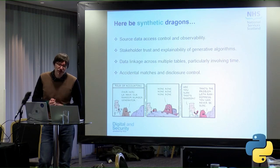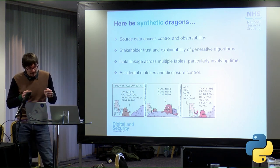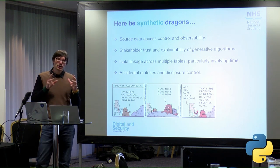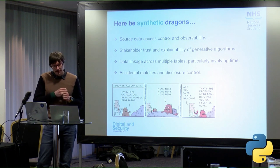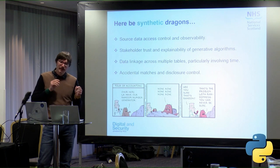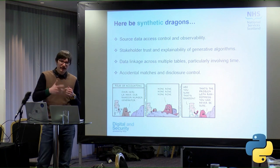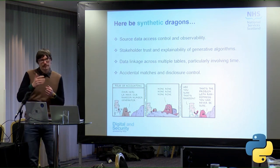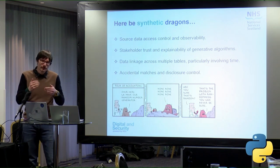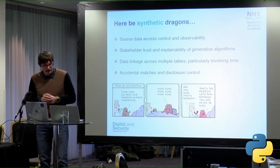And then of course there's accidental matches and disclosure control. In Scotland, for example, there's a Community Health Index number given to patients that has a certain logic — it includes a patient's date of birth and a cipher for their gender. If you're using synthetic data approaches to synthesize CHI numbers, it's pretty much inevitable you're going to have collisions with the real data just through that business logic, which creates extra dangers.